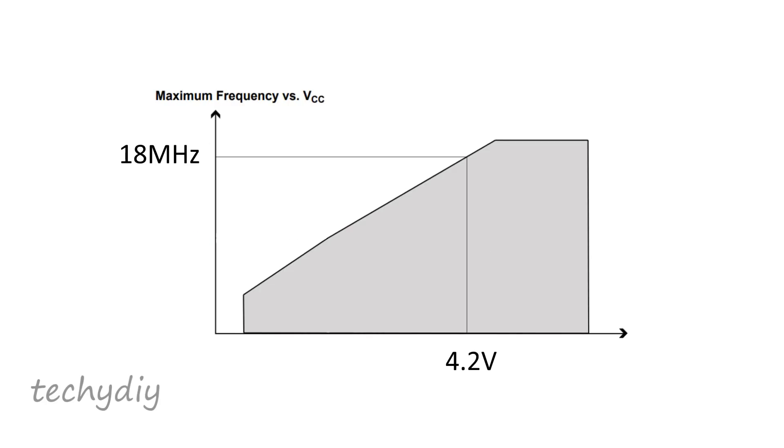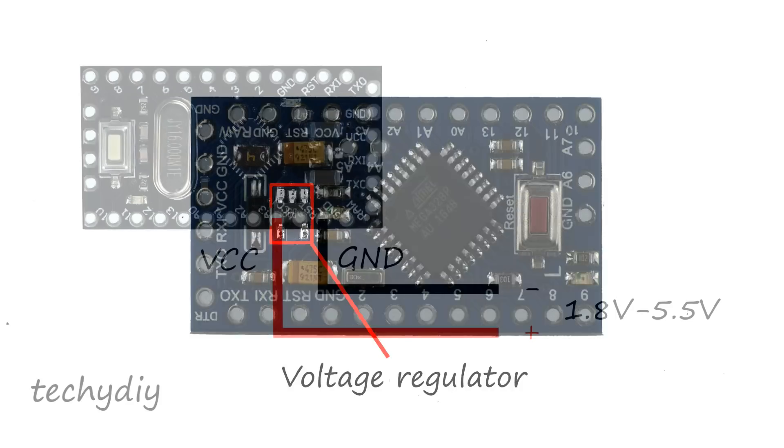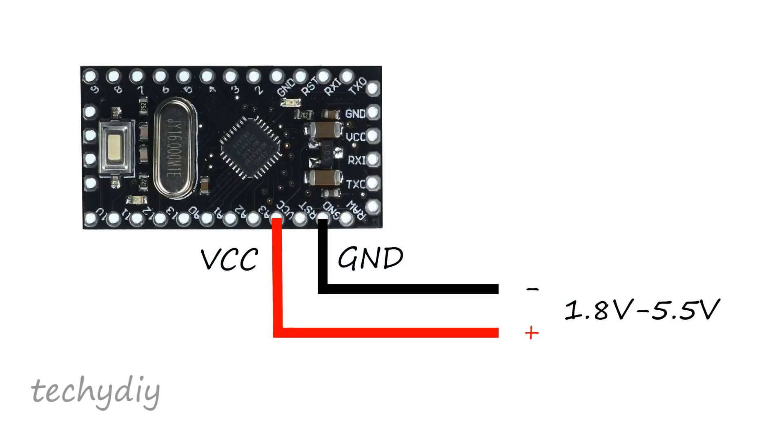For a supply voltage of 4.2 volts the maximum clock speed is 18 megahertz. And for a 3 volt supply the maximum clock speed is 12 megahertz. Because we have a battery power supply with a voltage output of 3 volts to 4.2 volts we can power the microcontroller directly without using the voltage regulator on the Pro Mini board. To do that the positive side of the power supply is connected to the VCC pin on the Pro Mini and the negative side to ground.